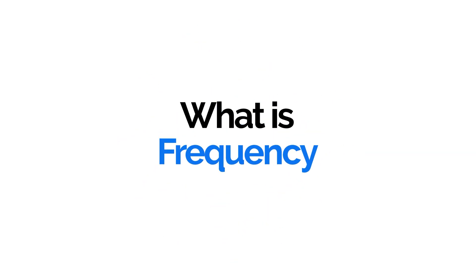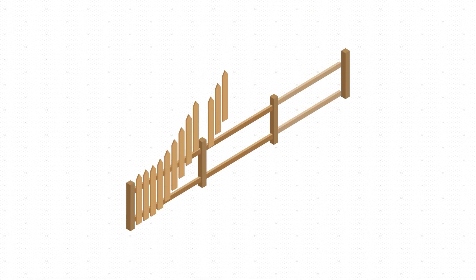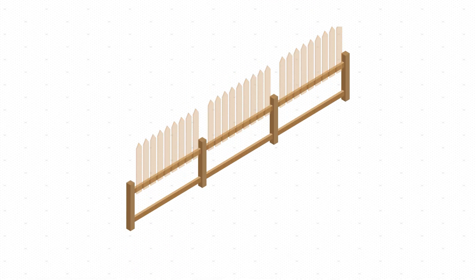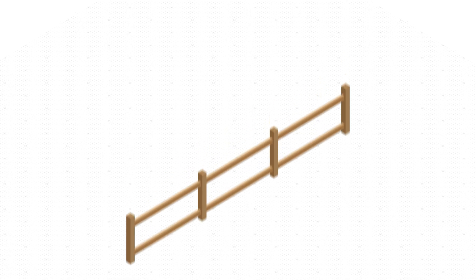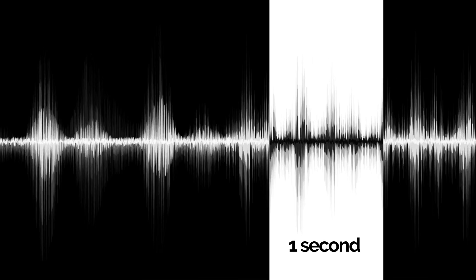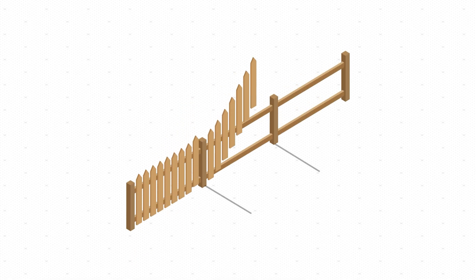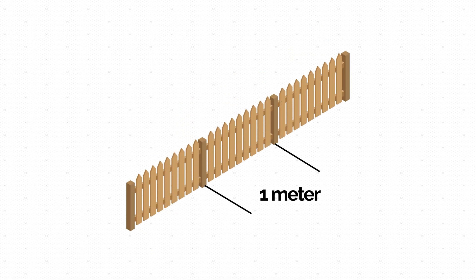What is a frequency? Let's start with terminology using fences as an example. Fences can be dense or sparse. Frequency describes how often something occurs within a certain interval. In sound, this interval is time, and frequency is the number of oscillations per second. In space, it could be a meter, with frequency representing how many fence boards fit within that meter.